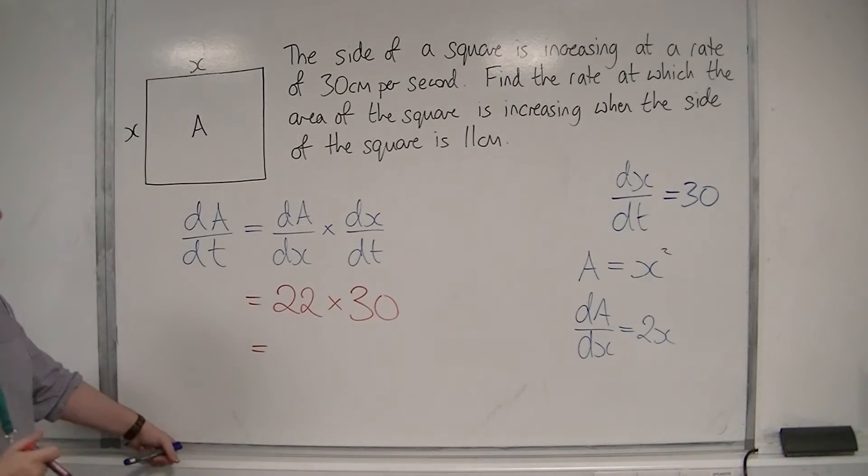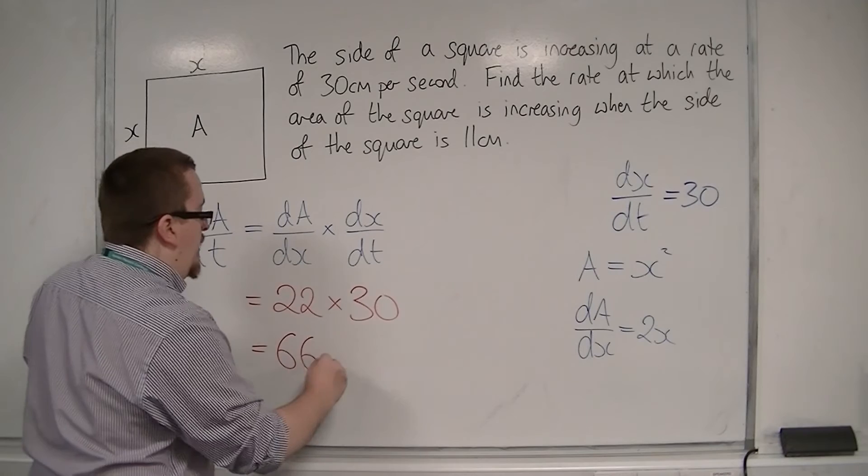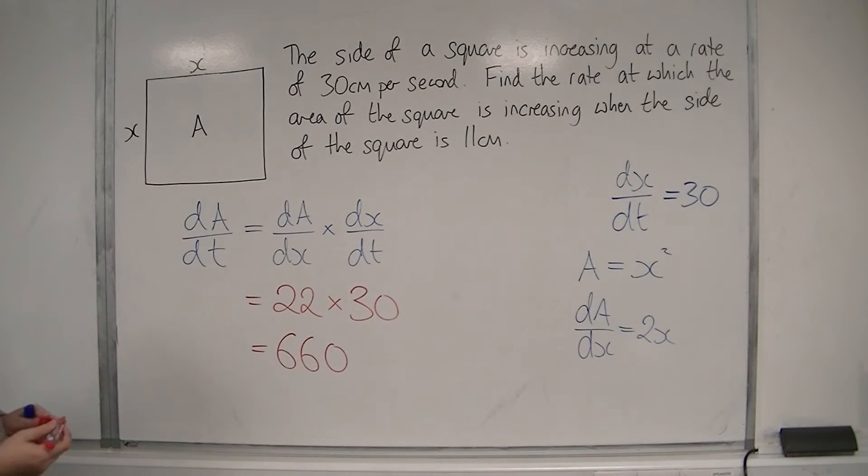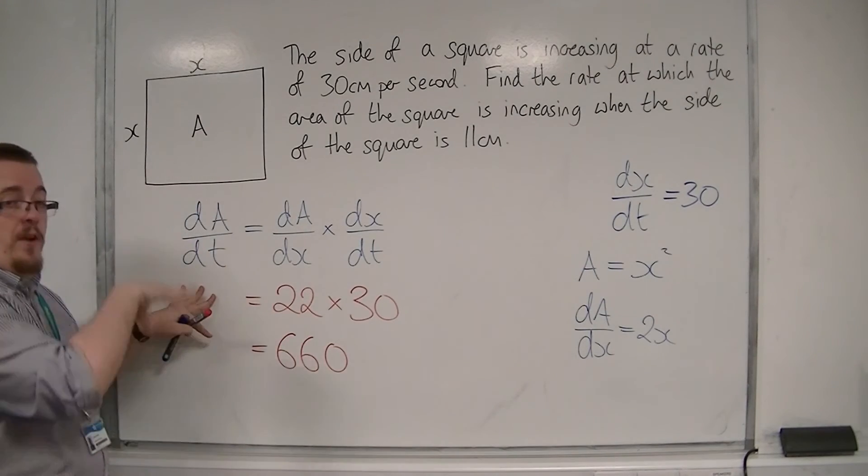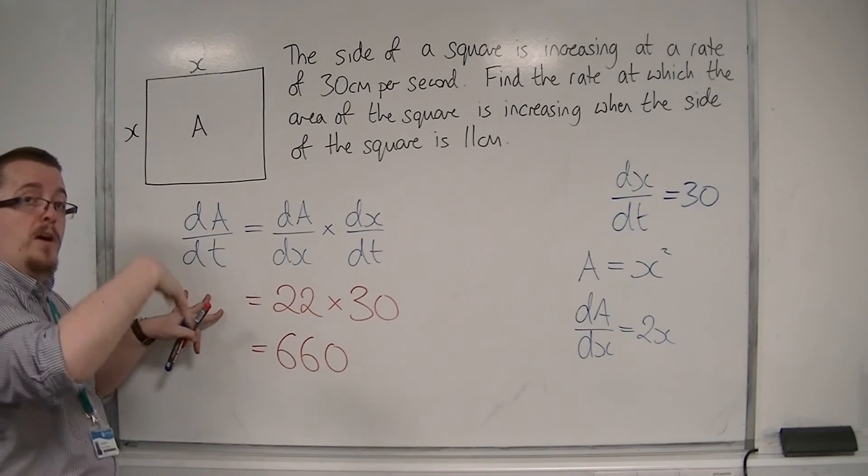So 22 times 30, which would give us 660. So it would be dA by dt, so it's centimetres squared per second.